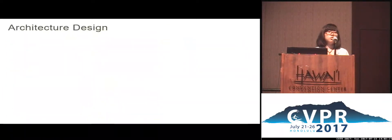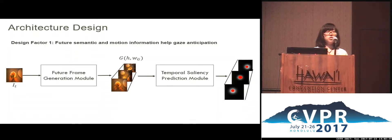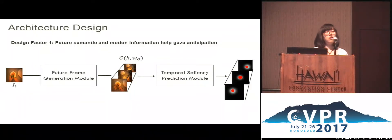The key to designing our architecture is driven by several factors. The first factor is that the semantic and motion information on the future frame could help guide gaze prediction. In the literature, researchers have already shown that visual features as well as motion information could guide gaze prediction. Thus, the intuitive idea is that we first have to synthesize realistic future frames, followed by temporal saliency prediction on these future frames.